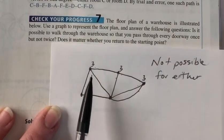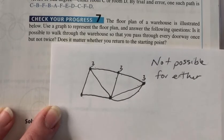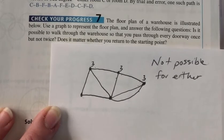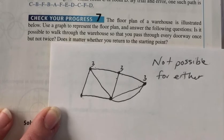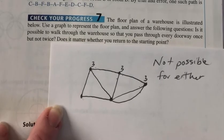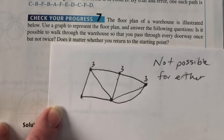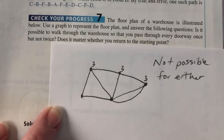We can only have two odd vertices in order for there to be an Euler path, and no odd vertices in order for there to be an Euler circuit. So neither one is possible.